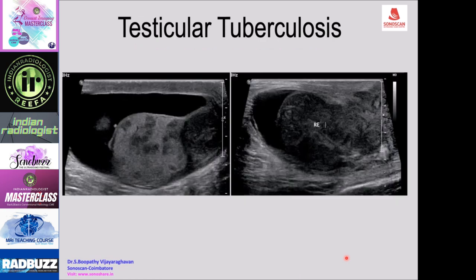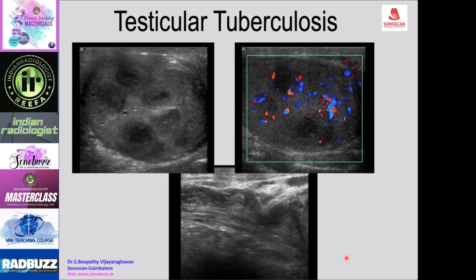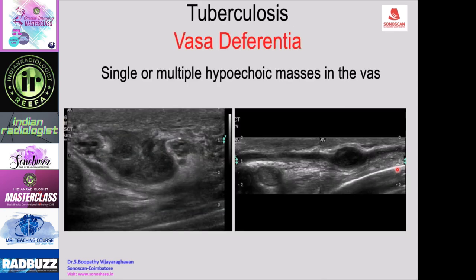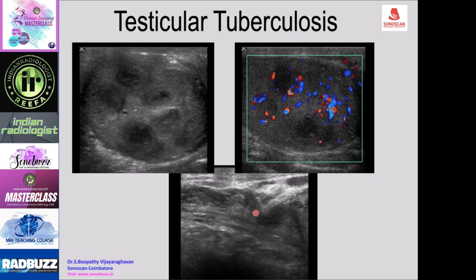In another case of tuberculosis, larger echopoor masses are seen in the testis with hydrocele, a mass in the tail of the epididymis, and on the right side the entire epididymis is enlarged and echopoor. In another case, testicular tuberculosis appears as multiple abscesses with no flow on power Doppler but hyperemia of the rest of the testis. The clue for tuberculosis is the thick vas deferens.